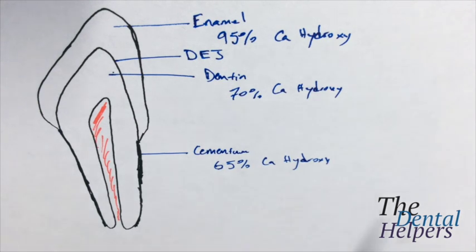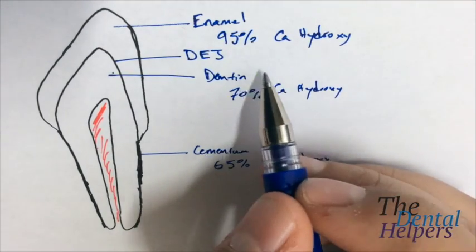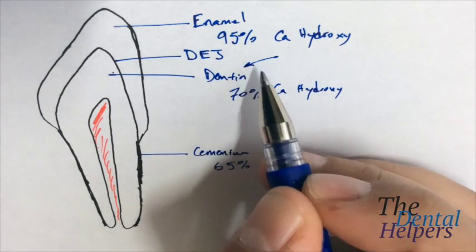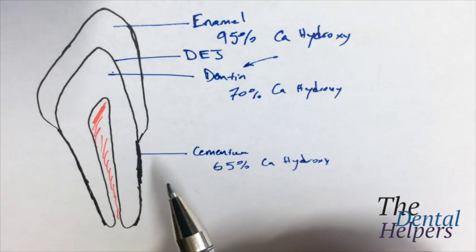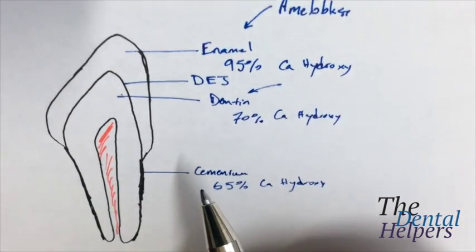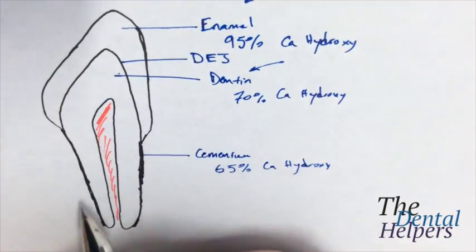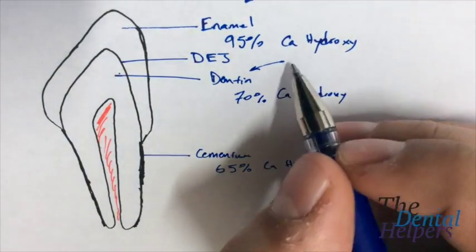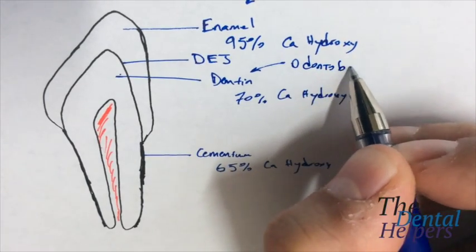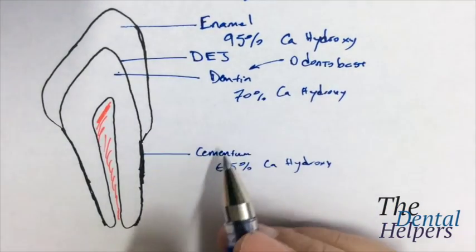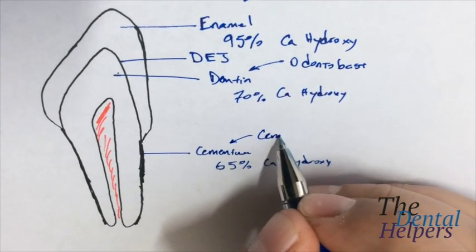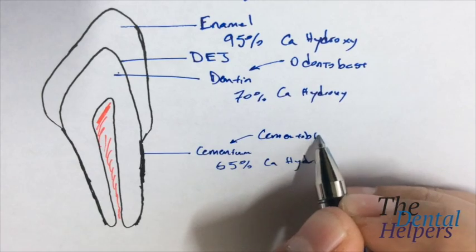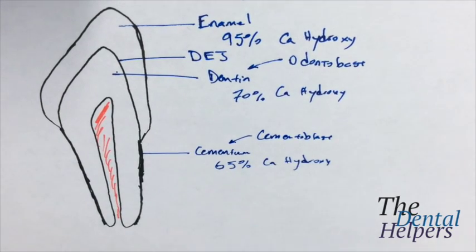And so, as we know that enamel is ameloblast. And the way I remember what the dentin is, is tooth means odont or odontia. And so the big bulk of the tooth is the dentin. So it's going to be made of odontoblasts. And the easiest, of course, is the cementum, which is the cementoblasts that give rise to the cementum.